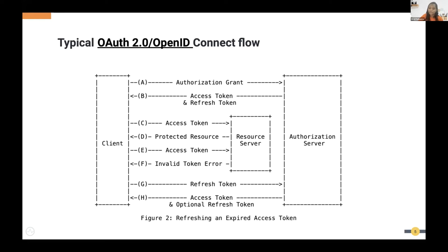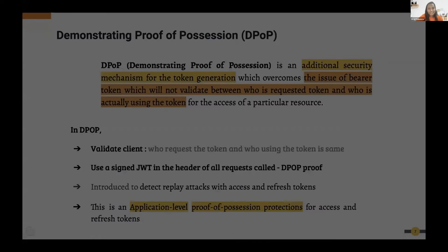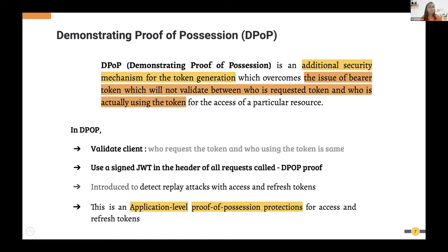So what is DPoP? DPoP stands for Demonstration of Proof of Possession. It is a kind of proof that tells that the requestor is the correct owner of the access token — it validates that the person making the token request or resource call is the same person who owns the access token. It basically validates the client.